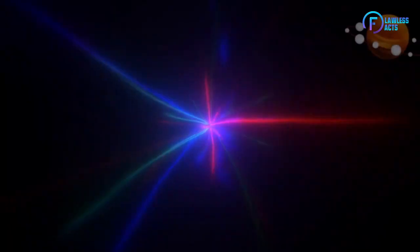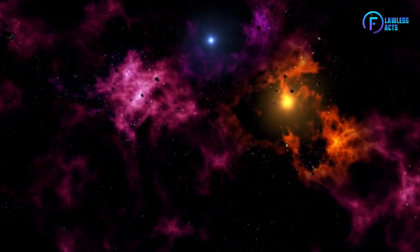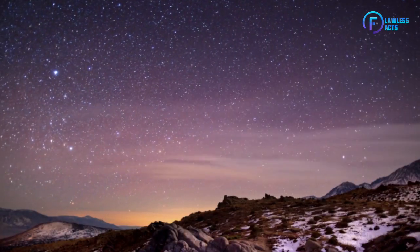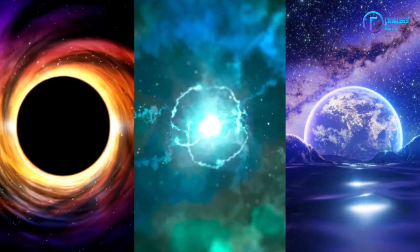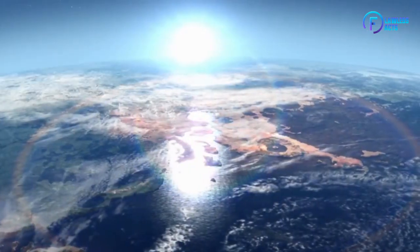Next is the neutron stars. They are incredibly dense objects that form when a massive star undergoes a supernova explosion and collapses under its own gravity. Neutrons, which are subatomic particles found in atomic nuclei, make up the majority of their structure.